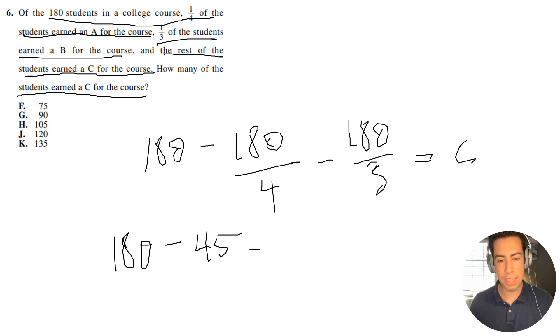And 180 divided by 3 is going to be 60. So I'm going to get 180 minus 45—I'll do this: 180 minus 60 is going to be 120, minus 45 is going to be 75.